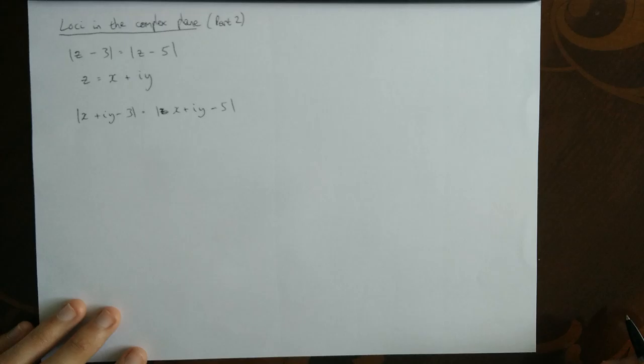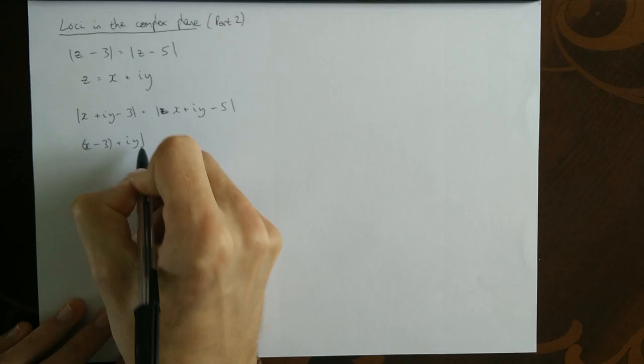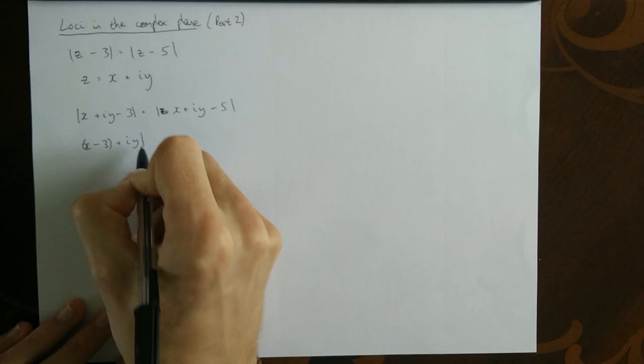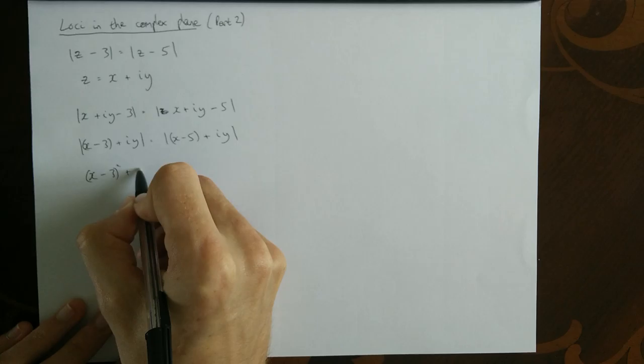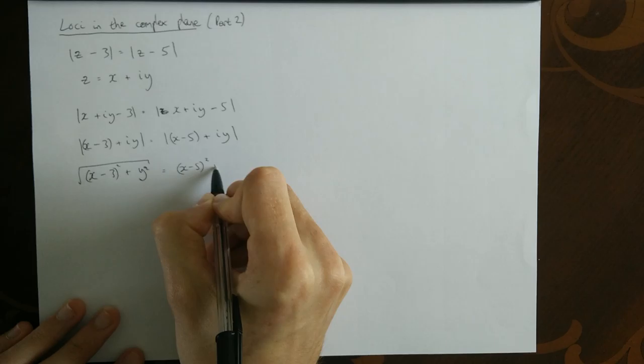Now we need to group the real parts and the imaginary parts, because we need to compute the modulus. And the modulus, of course, is going to be this squared plus this squared square rooted equal to the real part squared plus the imaginary part squared square root.